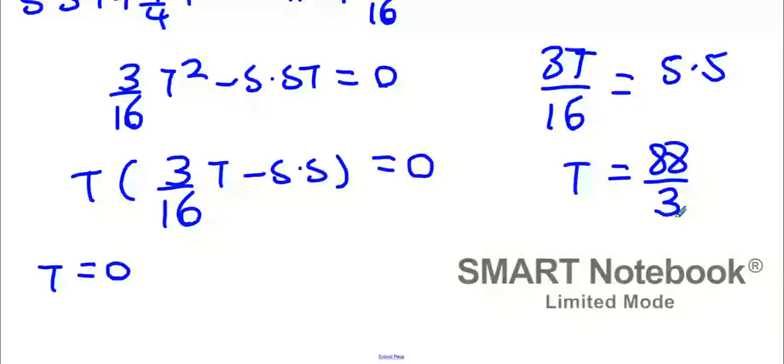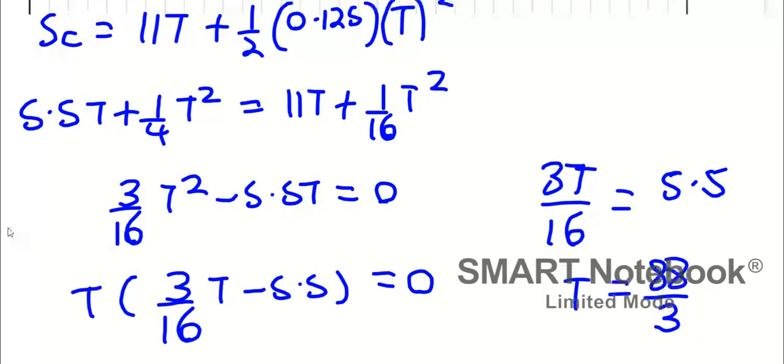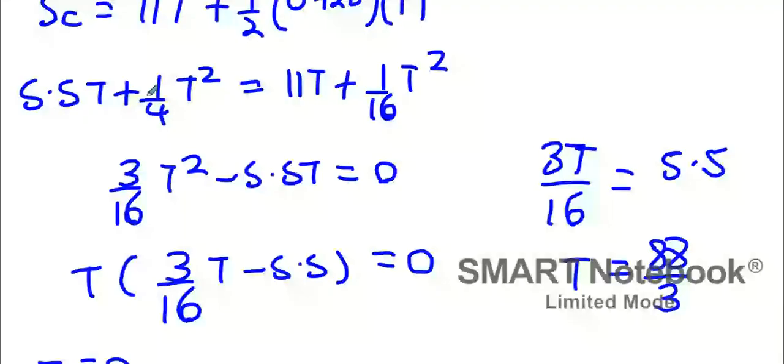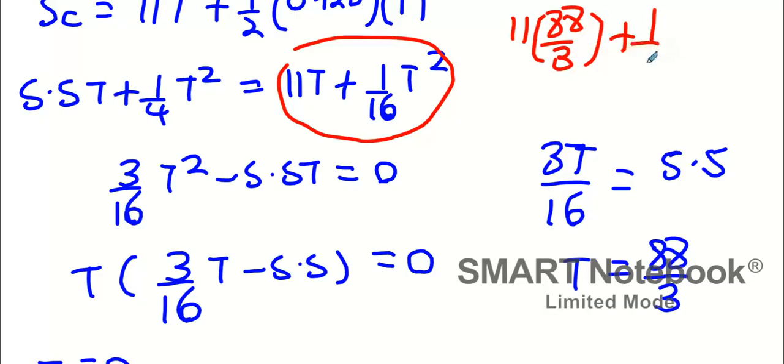What was I asked for? I wasn't asked for the time, I was asked for the distance. So I can stick it back into either equation I want, and the equation I'll use is this one here. It's going to be 11 times 88 over 3 plus one sixteenth times 88 over 3 squared. That's 3388 all over 9 meters.